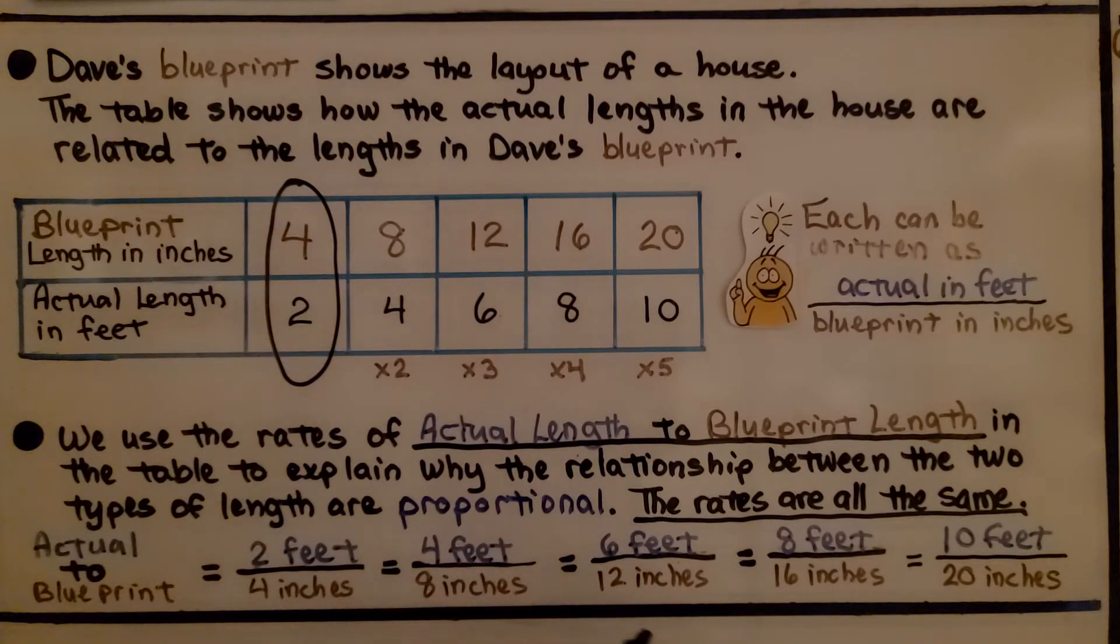6 feet to 12 inches. 8 feet to 16 inches. And 10 feet to 20 inches. We're showing the actual length to the blueprint length. And they are all in proportion to each other.